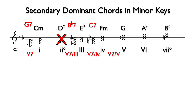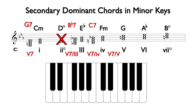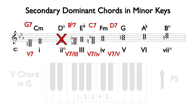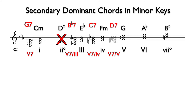Next, we will find 5 or 5-7 of 5. We find the 5 chord in G, which is the interval of a perfect 5th above G. This is D or D7, and the notes are D, F-sharp, and A for the triad, with C added for the 7th.